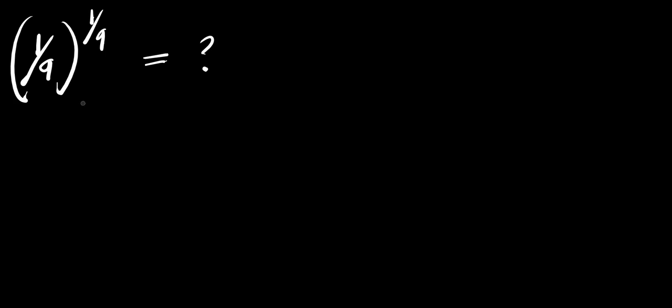Hello. In this video, we are going to simplify this. We have 1 divided by 9 to the power of 1 divided by 9. So how can we simplify this to the lowest form?